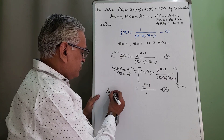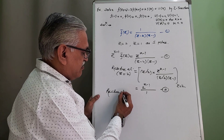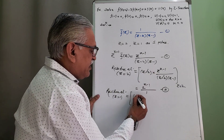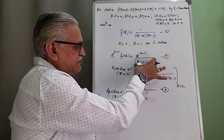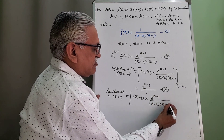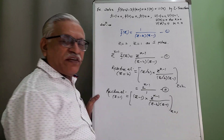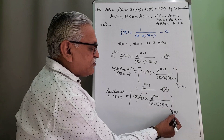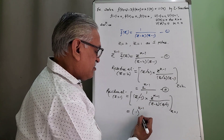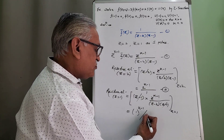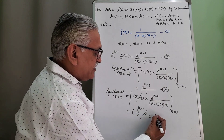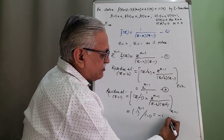Residue at the second pole Z=1: multiply (Z−1) by Z^(k−1)/[(Z−2)(Z−1)], the (Z−1) factors cancel, then substitute Z=1. We get 1^(k−1)/(1−2) = 1/(−1) = −1. Since 1 raised to any power is 1, the residue at Z=1 is −1. This is equation 4.